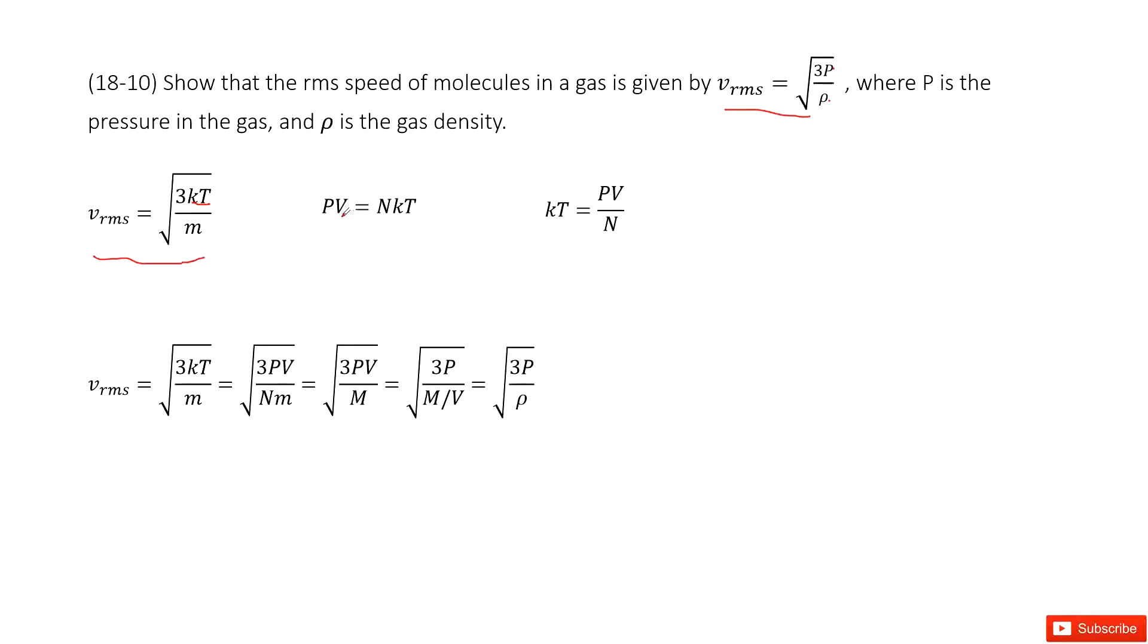Yes, we have the function: PV equals nkT. This is the ideal gas law. In this case, you can get kT equal to PV over n. And so in this one, we can input the kT inside. So we replace kT as PV divided by n.